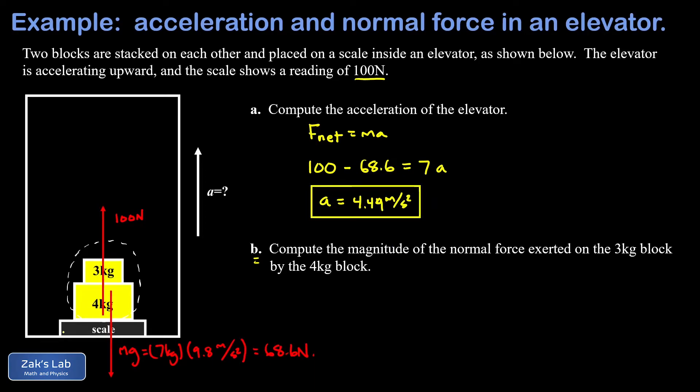Now in part B we want to get the magnitude of the normal force exerted on the three kilogram block by the four kilogram block. So this time we're analyzing forces just on that three kilogram mass by itself. And of course the force of gravity is pulling down on that with a magnitude of mg. If we plug in the mass of three kilograms and g as 9.8 again, we find an approximate weight of 29.4 newtons.